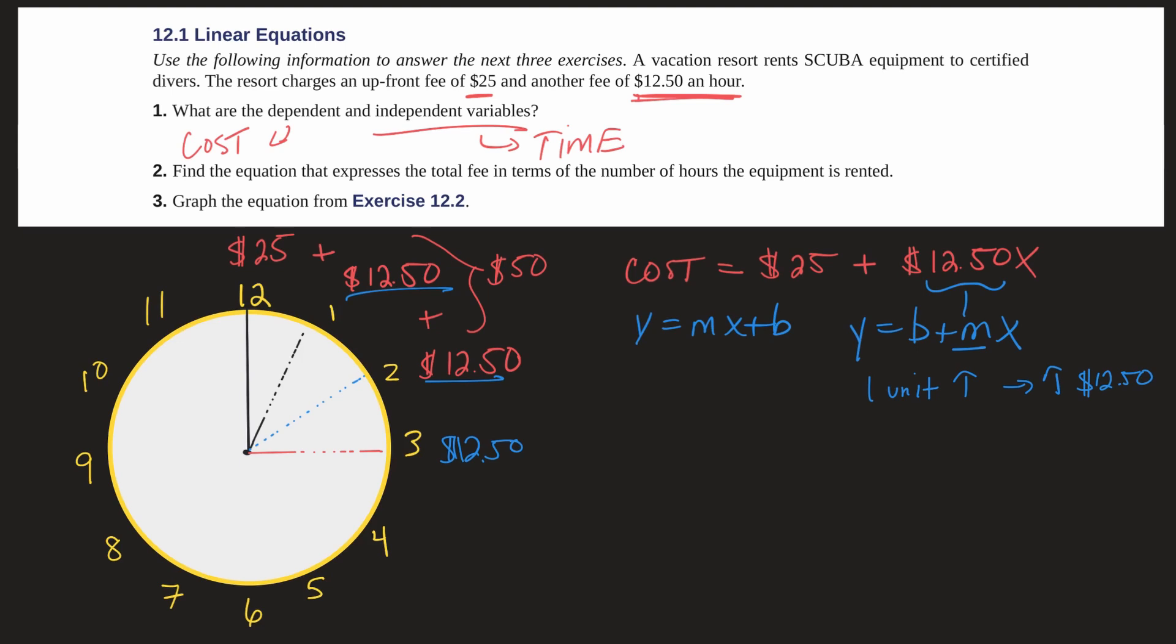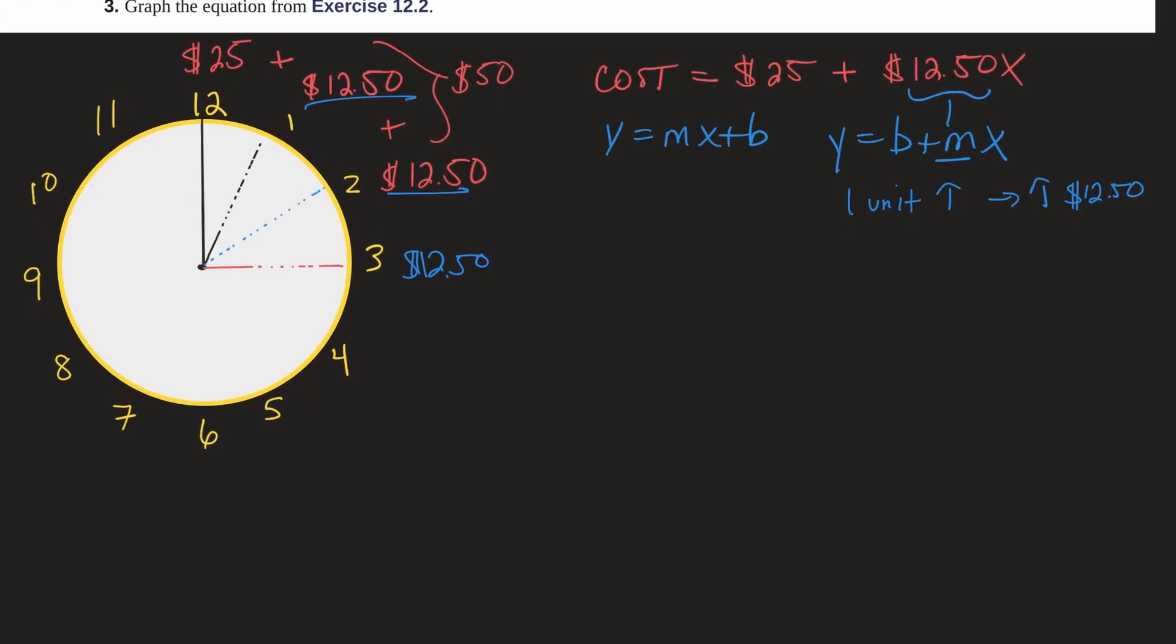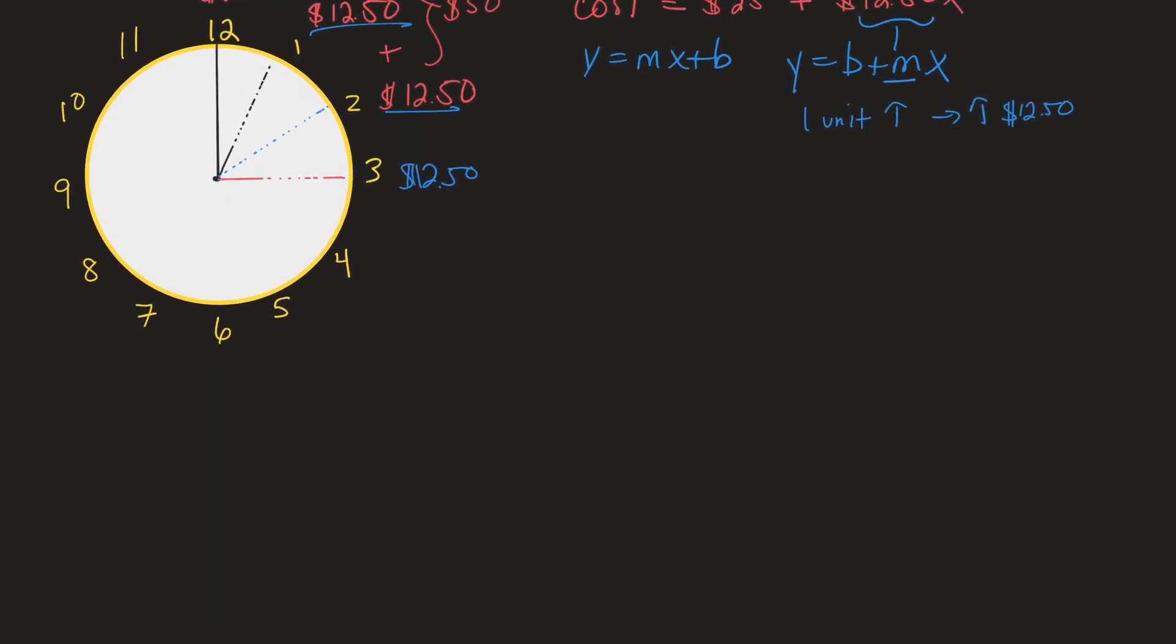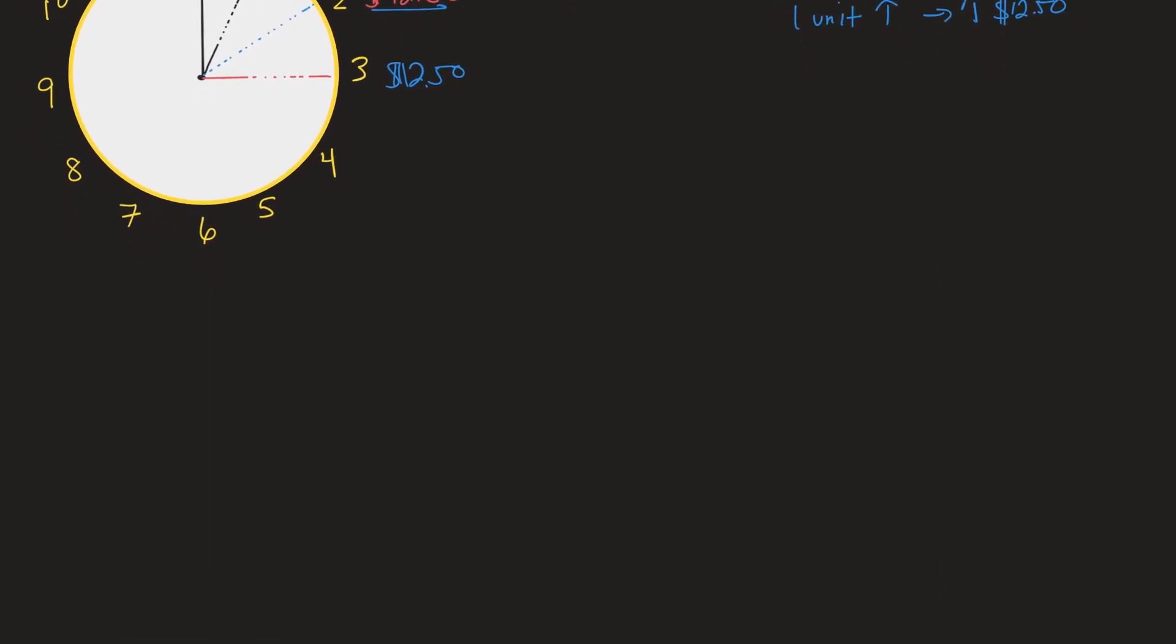All right, number three, graph the equation we have up here. Now what I'm going to do is we're going to graph this using the two common methods. Make some room here. So we have our equation which is y equals $25 plus $12.50 per hour.